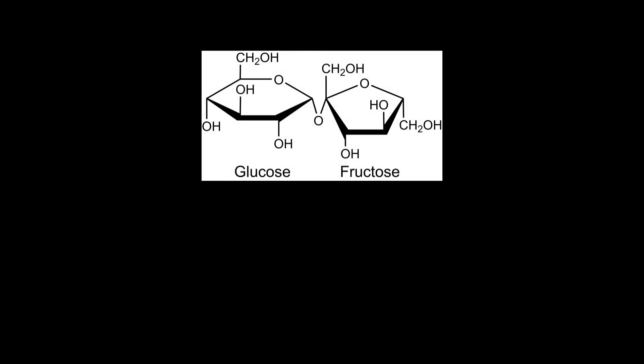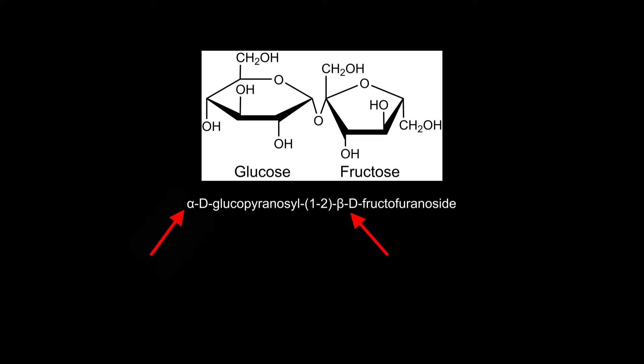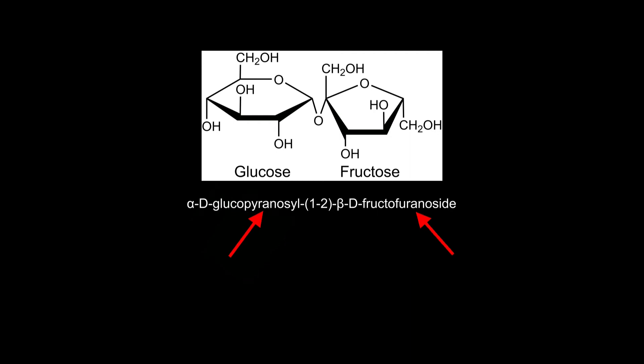The full name of a saccharide, like sucrose, looks like this: alpha-D-glucopyranosyl 1,2 beta-D-fructofuranoside. First, the position of the hydroxyl group at the anomeric carbon atom is named. Then whether the monosaccharide is a D or L sugar. Next, the monosaccharides are named together with the information whether the pyranose or furanose form is present, and the carbon atoms of the glycosidic bond are added in between.